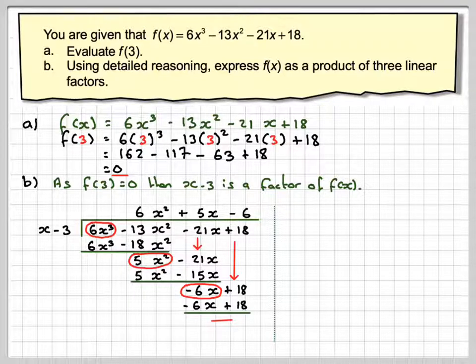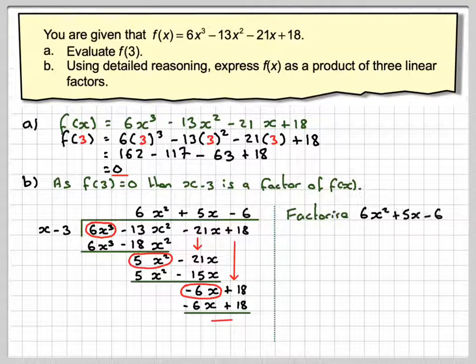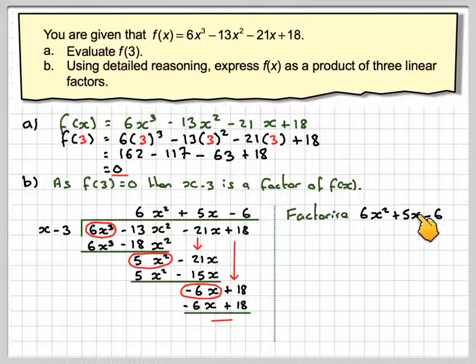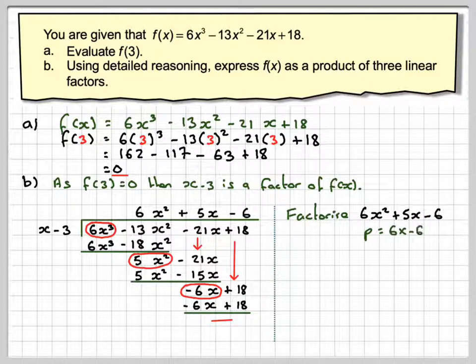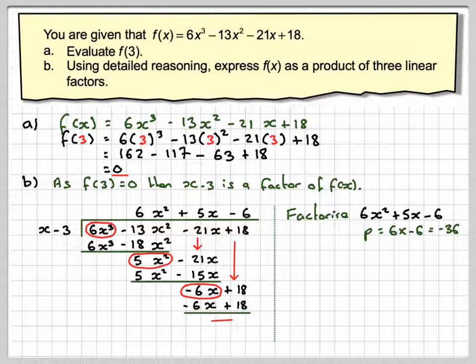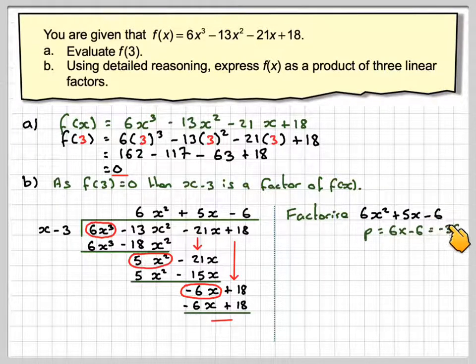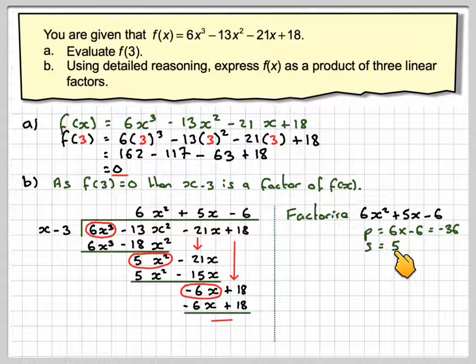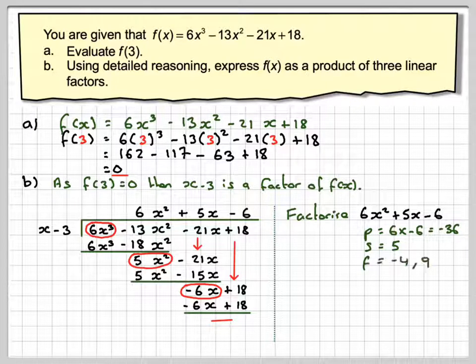So what we need to do now is factorise the quadratic expression. So this is the way I factorise the quadratic expression. The product is 6 times minus 6, which gives me minus 36. I take that first number and multiply it by the last number. Then the sum is 5. Then I want two numbers. When I multiply them together, I get minus 36. And when I add the same two numbers, I get 5. These are called the factors.